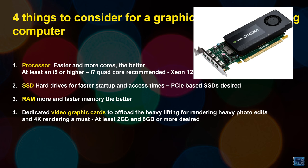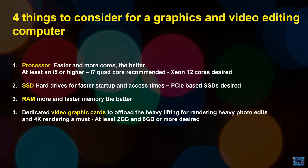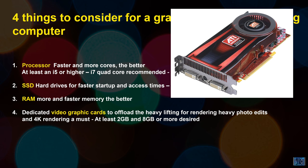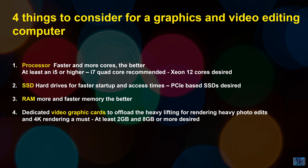Fourth is a dedicated video graphics card to offload heavy lifting for rendering, heavy photo edits, and 4K rendering — at least 2GB, with 8GB or more desired. The two big names are Nvidia/GeForce and ATI. Graphics cards aren't necessarily needed for basic photo editing, but if you're doing a lot of layers, renderings, and filters, they use the cores on your processor. For video editing, especially 4K, that's where graphics cards really come into their own.